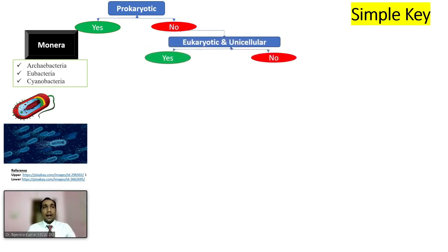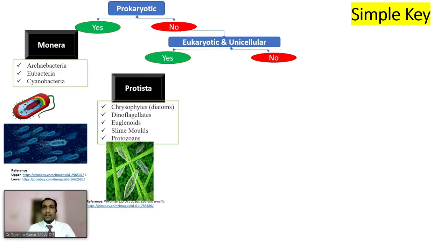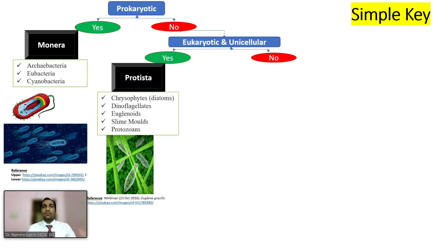If no, then are they eukaryotic and unicellular? If yes, then they belong to Protista. Examples are Chrysophytes, Diatoms, Dinoflagellates, Euglenoids, Slime molds, and Protozoans.